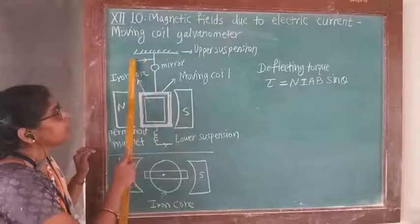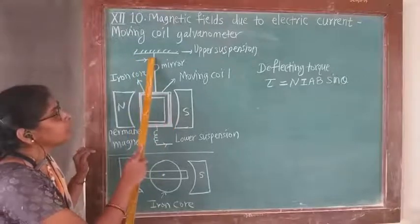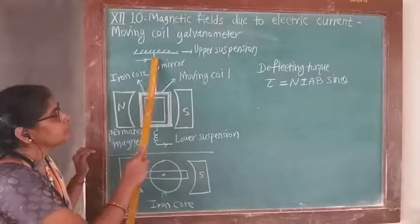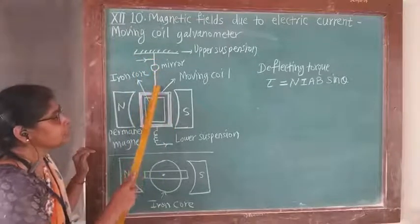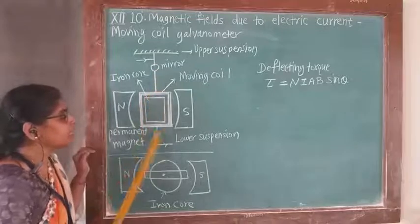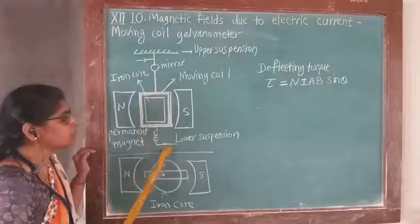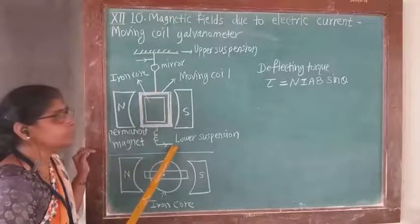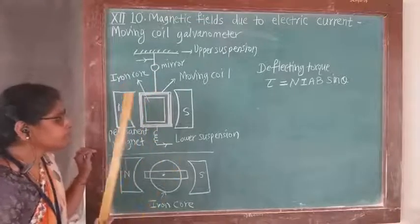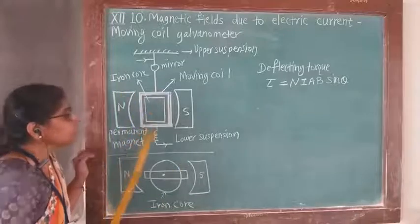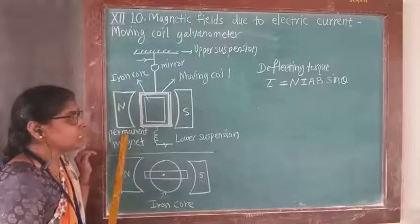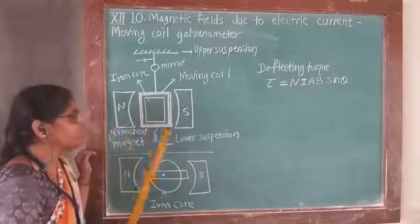The current can enter the coil through this suspension wire and it leaves the coil through this helical spring. The magnet is permanent and the coil is moving.